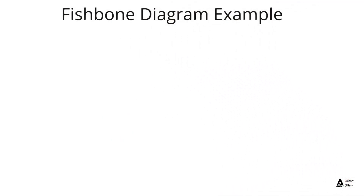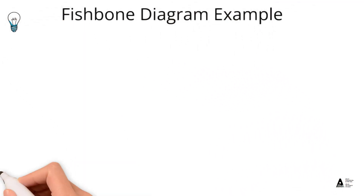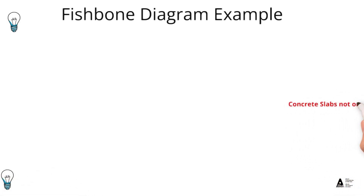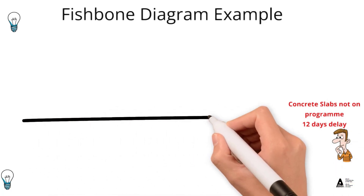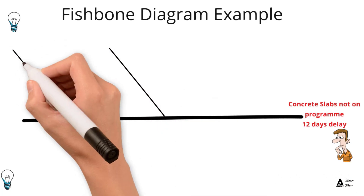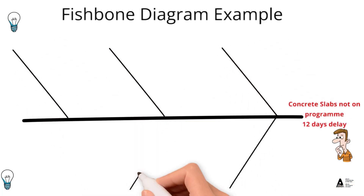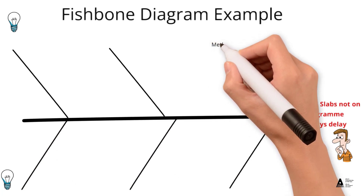Hello and welcome. We're going to look at a short fishbone diagram. The problem we have is a construction problem — concrete slabs are not on program, and we are 12 days behind schedule. First of all, we're going to start and draw a fishbone diagram structure to capture our main categories.